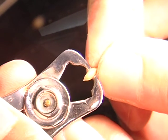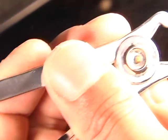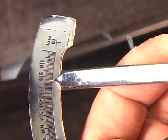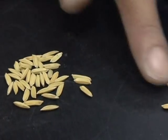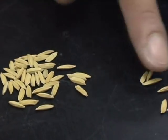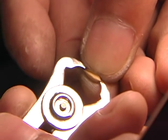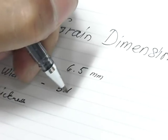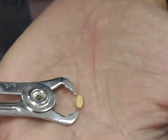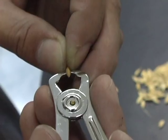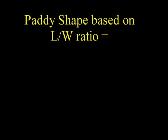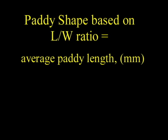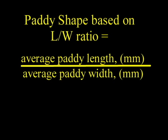To obtain the average length and width of the paddy grains, use a vernier caliper or photographic enlarger. Collect 20 paddy samples at random from each replicate and measure the dimensions. To obtain the paddy shape, use the following equation: average paddy length in millimeters divided by average paddy width in millimeters.